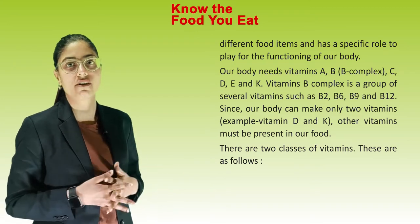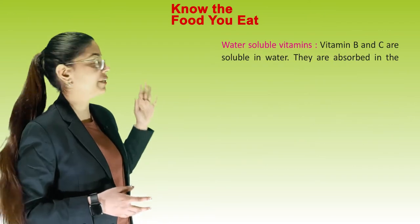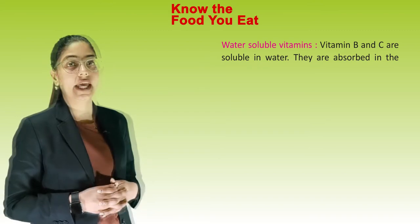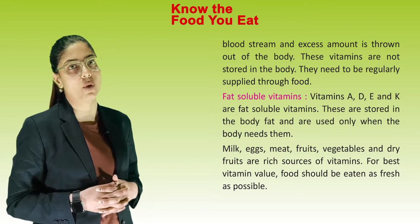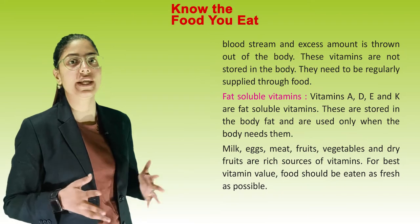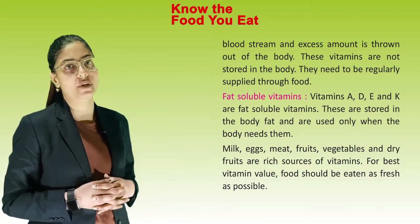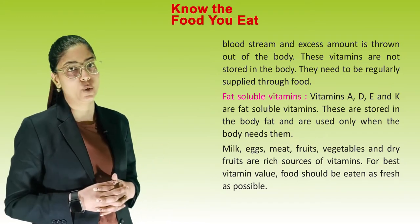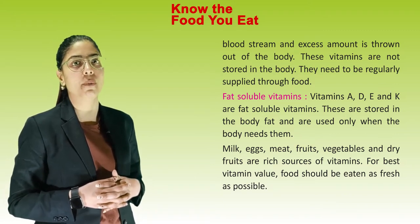There are two classes of vitamins. Water soluble vitamins: Vitamin B and C are soluble in water. They are absorbed into the bloodstream and any excess amount is thrown out of the body. These vitamins are not stored in the body and need to be regularly supplied through food. Fat soluble vitamins: Vitamin A, D, E and K are fat soluble vitamins. These are stored in the body fat and are used only when the body needs them.